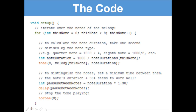So in the void setup, first we need to iterate over the notes of the melody. So this line of code: for (int thisNote = 0; thisNote < 8; thisNote++). Now what this does is it just goes over the notes of the melody one, two, three, four, five, six, seven, just like that.